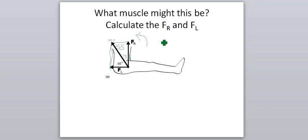So basically, the sine of 55 degrees is equal to the leg opposite, FR, over F. I'll call this iliopsoas muscle F. And the cosine of 55 degrees will give you FL over F. And then you solve for F. Pretty straightforward.